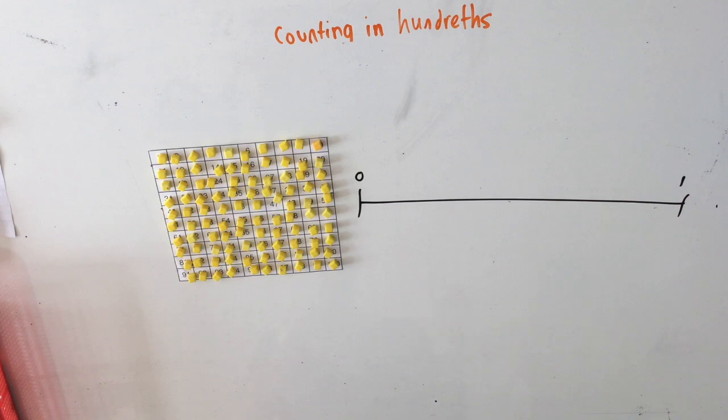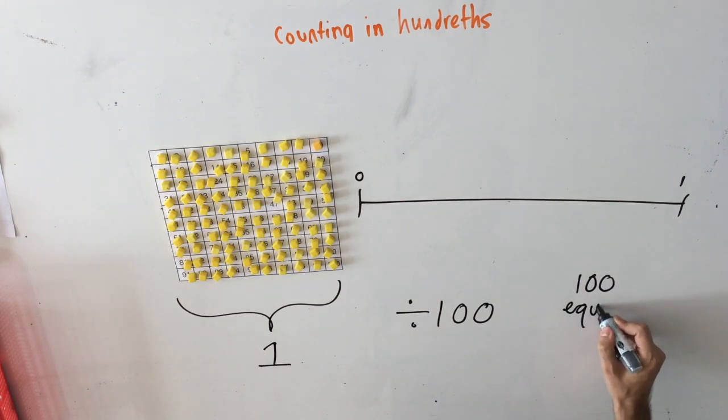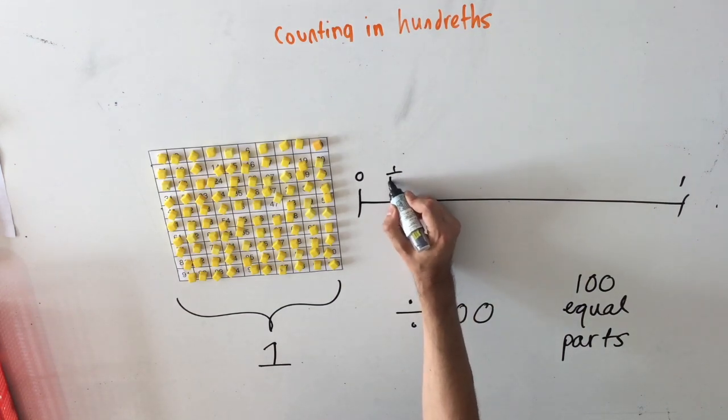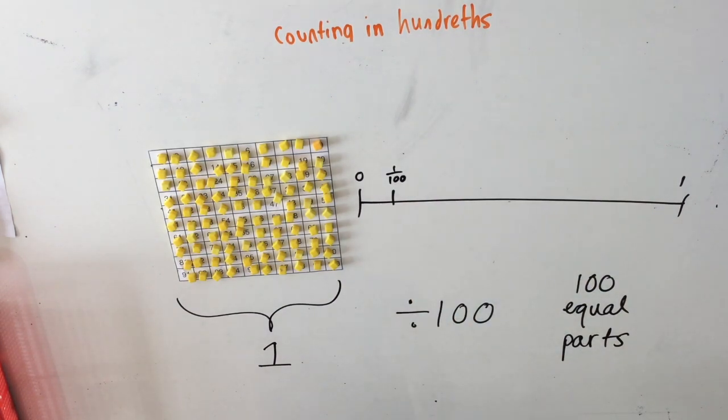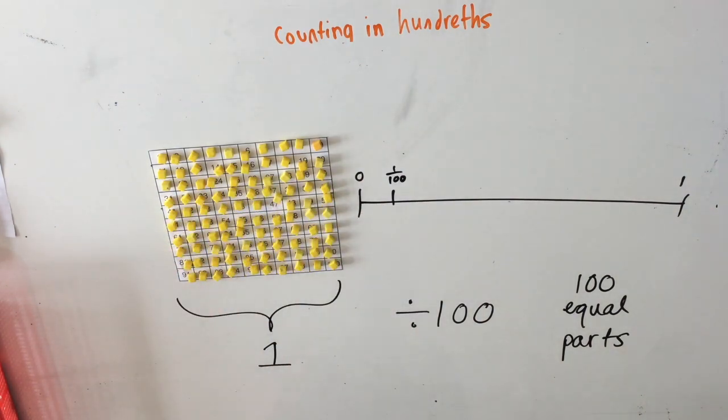When counting one hundredths, we need to remember that you begin with the whole, which equals one. In order to make it one hundredths, you divide that one by one hundred, which makes one hundred equal parts. You count each one of those equal parts as one one hundredth, until you get to one hundred one hundredths, which equals the whole one.